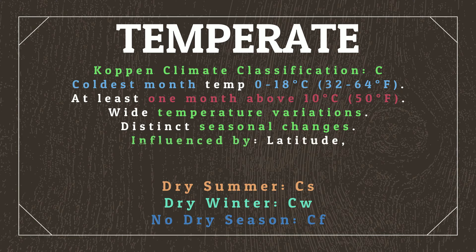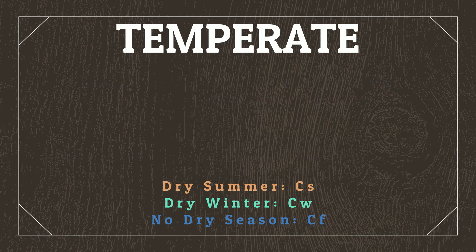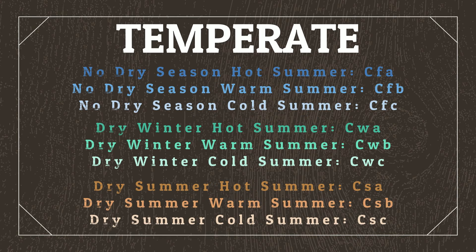Temperate zones usually have wider temperature variations throughout the year compared to tropical climates, and these temperature variations create distinct seasonal changes. Not only are temperatures influenced by latitudinal changes, but also by ocean currents, prevailing winds, how big a continent is, and altitude. This has led to further differentiation between temperate zones that have a hot summer, a warm summer, and a cold summer. By combining the distinctions between dry seasons and distinctions between summers, there are multiple type combinations that lead to distinct climate zones.